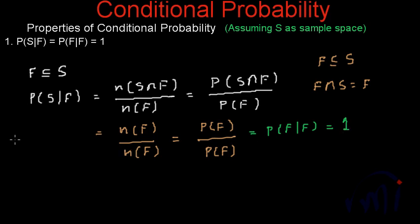So from these three points, we can say that probability of S where F has already happened equals probability of F where F has already happened, and this is equal to 1. This is our first property. It's very simple.